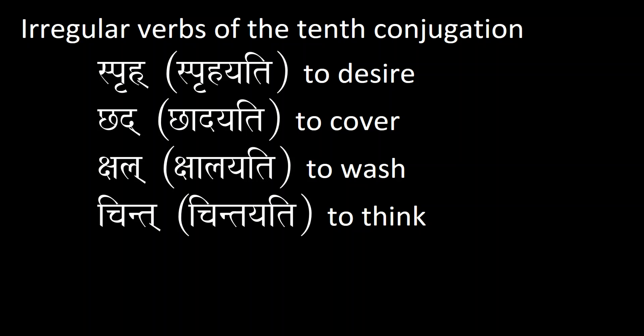Spṛh means 'to desire' and it becomes spṛhayati. The reason why it is an irregular verb is that the 're' is not taking guṇa — it's a medial vowel, a short medial vowel that should have taken guṇa, but as we see in the conjugation it stays as it is, simply adding the 'y' and then the 't' at the end.